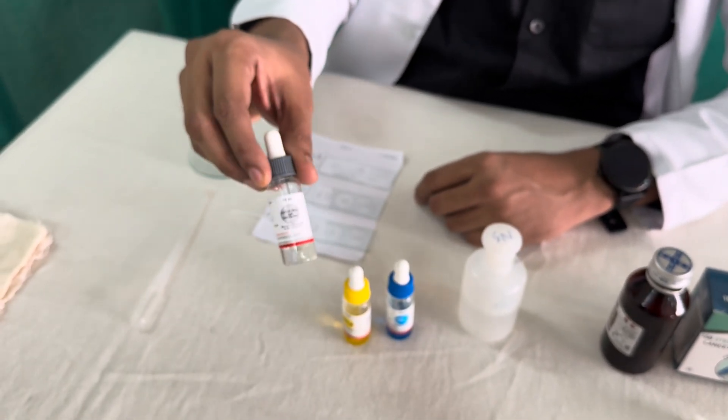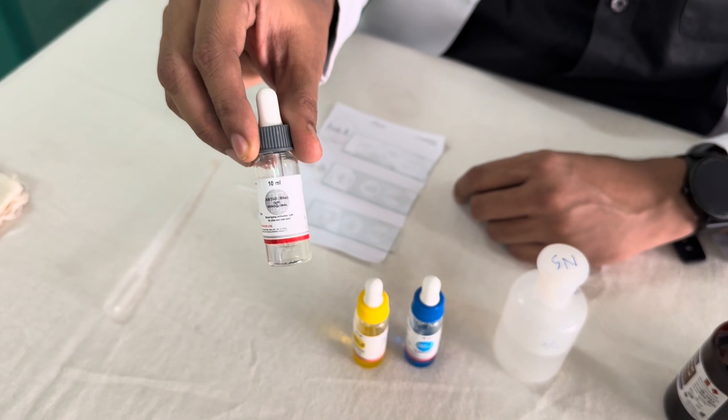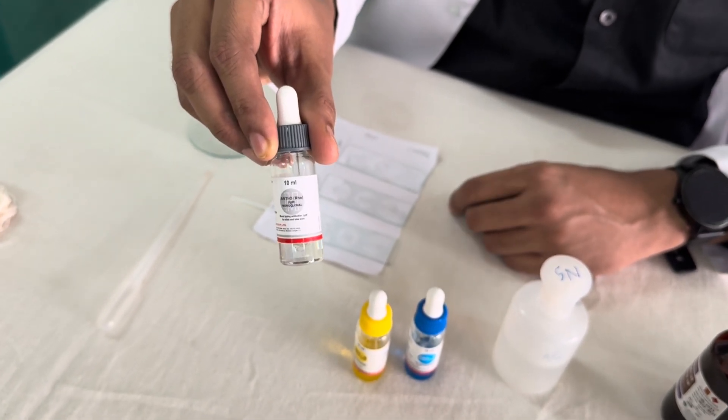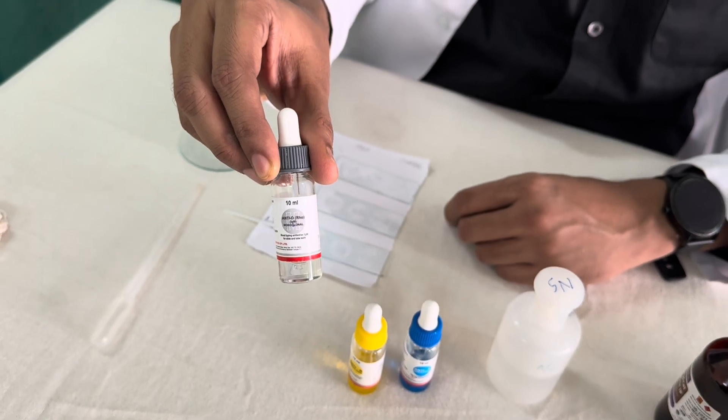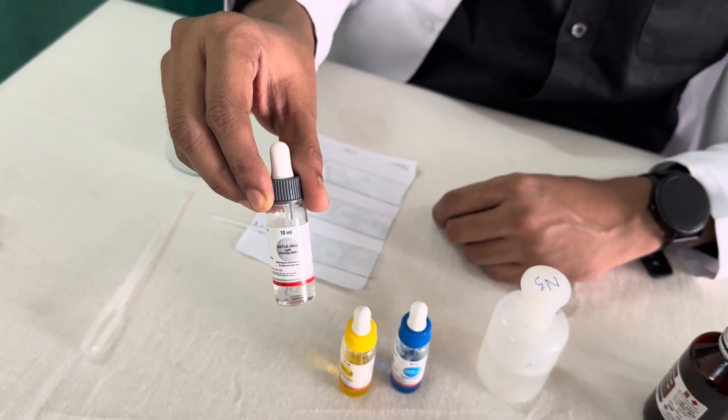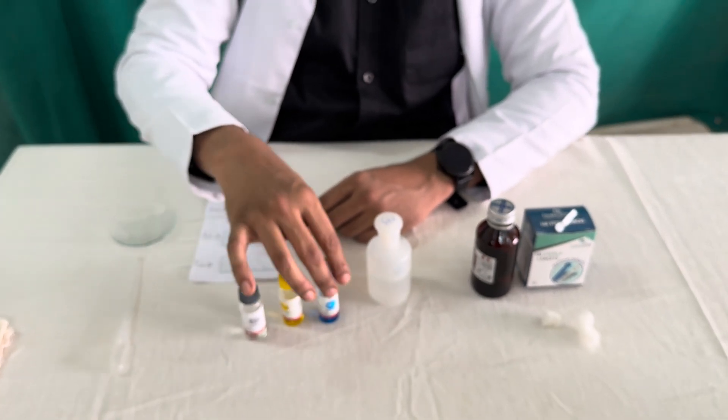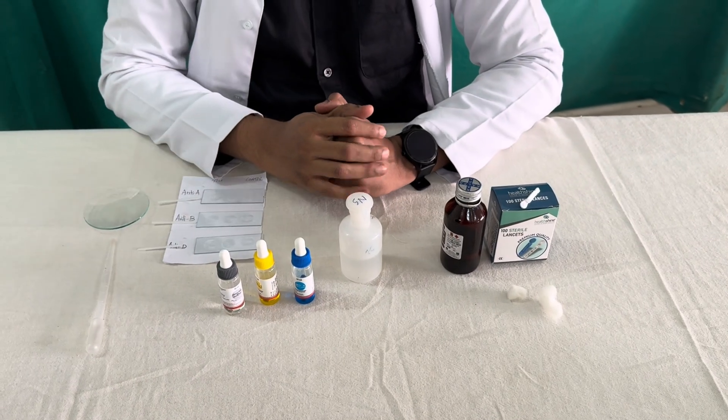It contains antibodies against the A antigen. Then this is anti-D antibodies. All this fluid basically contains antibodies against the respective antigen. This is for RH antigen. Those who do not know the theory, please go back to our playlist on Doctor's Corner. We have already explained the theory part of the blood group.